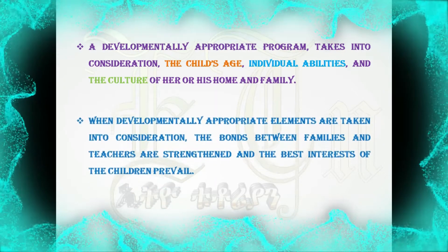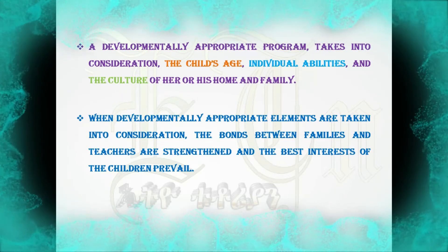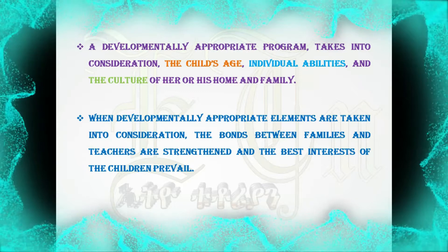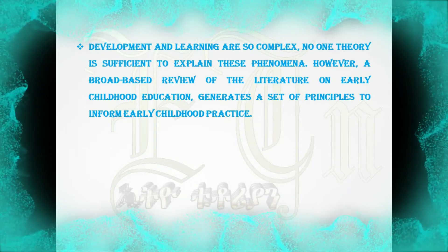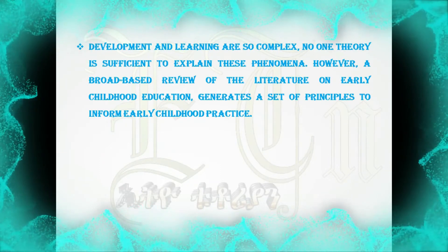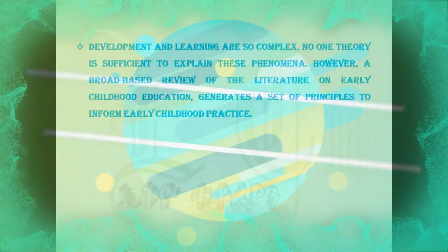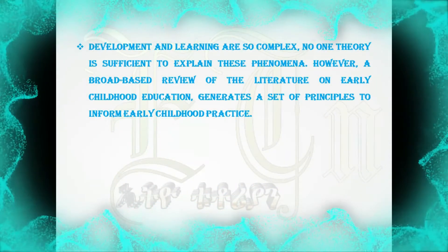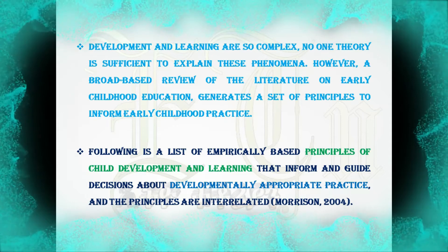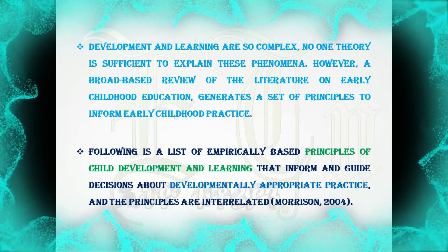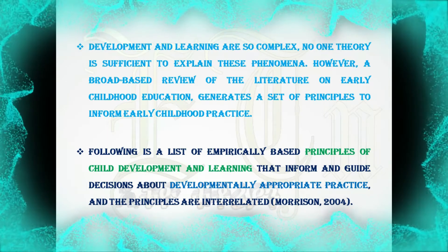When developmentally appropriate elements are taken into consideration, the bonds between families and teachers are strengthened and the best interests of the children prevail. Development and learning are so complex that no one theory is sufficient to explain these phenomena. However, a broad-based review of the literature on early childhood education generates a set of principles to inform early childhood practice. The following is a list of empirically based principles of child development and learning that inform and guide decisions about developmentally appropriate practice, and the principles are interrelated.